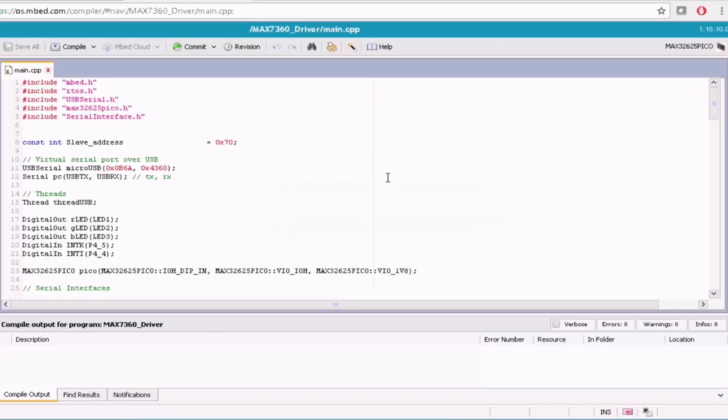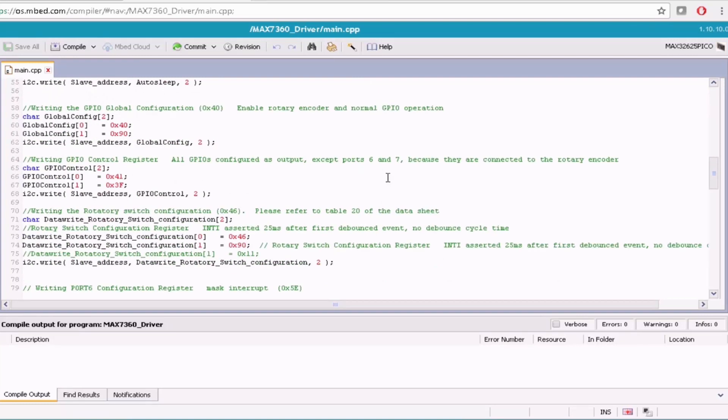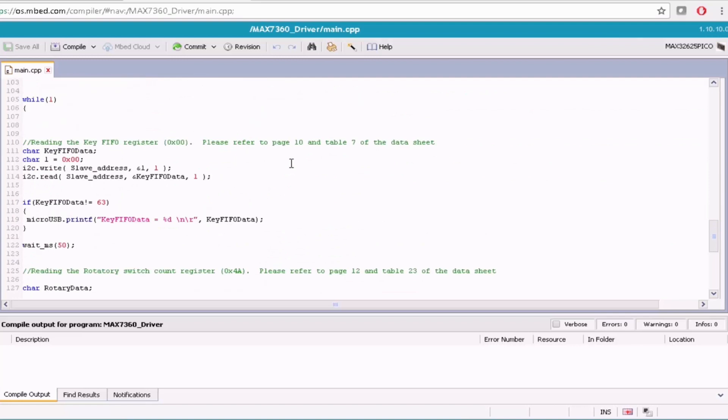Now let's have a quick tour through the code. This is a pretty straightforward algorithm. Initially, we have configured the registers that are required to monitor the key switches and rotary switches through I2C. This is a write operation. Once this is done, the following code is reading the MAX7360 through I2C, which tells the status of key switches and rotary encoder.